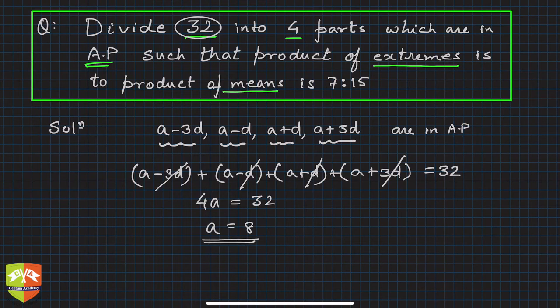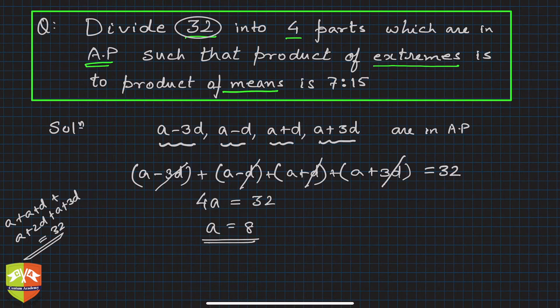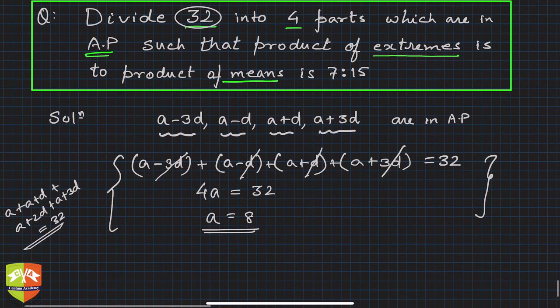Now it's much easier because you know one variable. If you started with a, a plus d, a plus 2d, a plus 3d, you would have a linear equation in two variables, which is correct but doesn't eliminate d immediately. This method gives us a equals 8 directly, making our life easier.